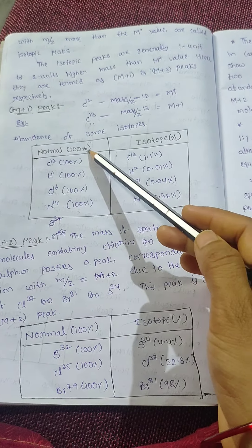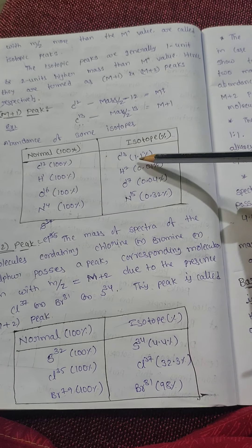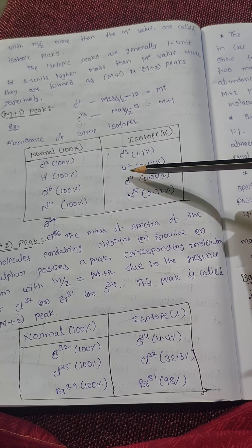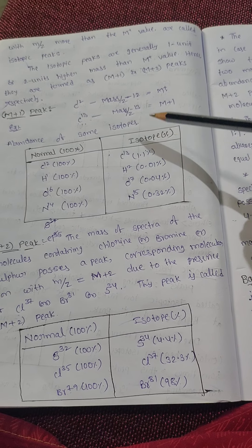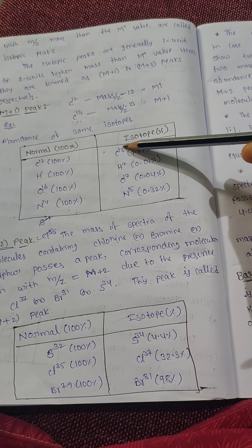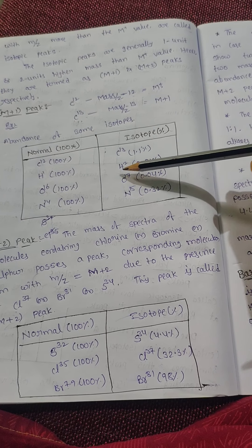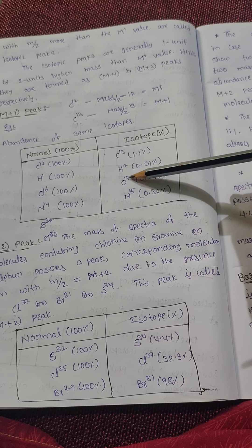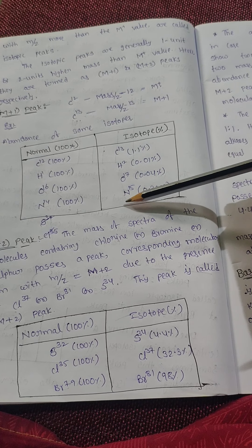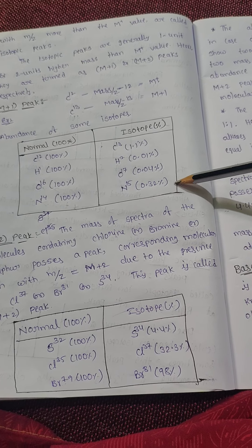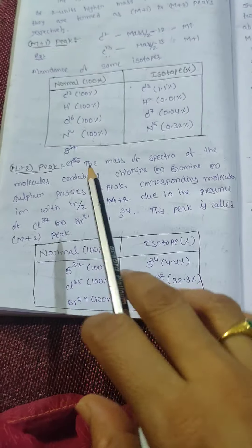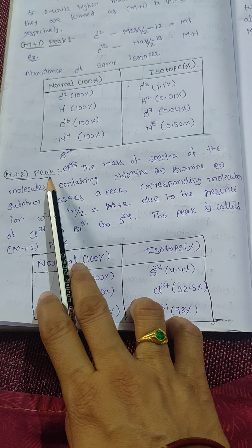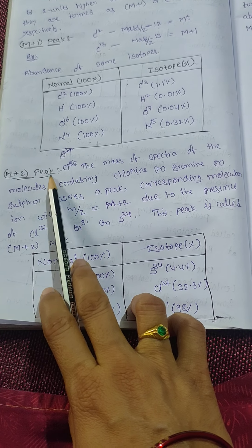The normal isotope intensity is taken as 100 percent. For M+1 peaks, the isotope intensities are: carbon-13 at 1.1%, deuterium (H-2) at 0.01%, O-17 at 0.0104%, and N-15 at 0.32%.